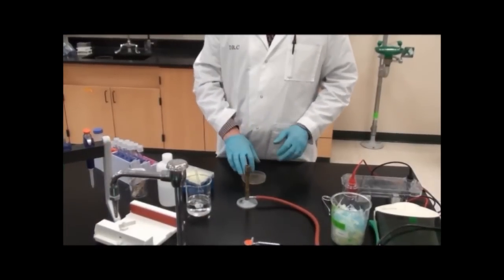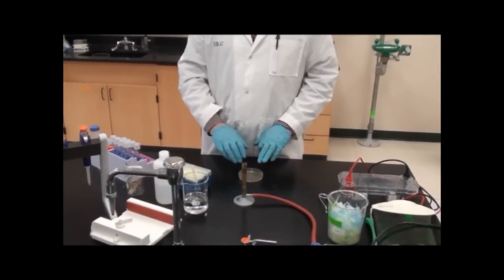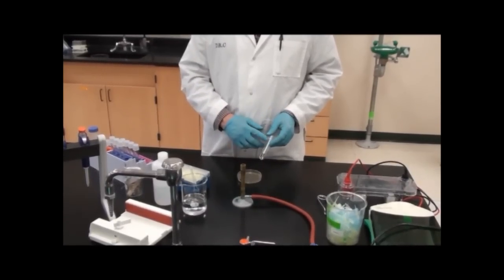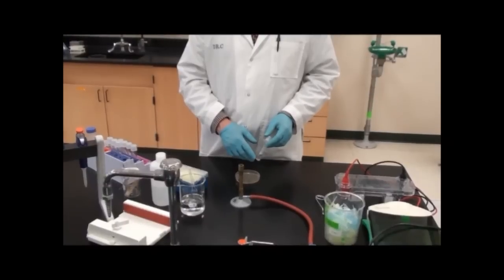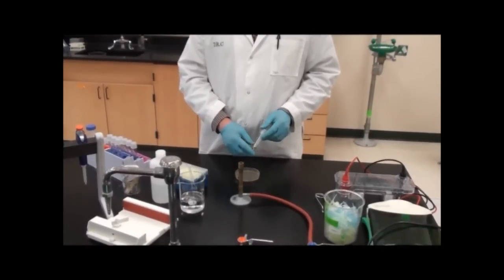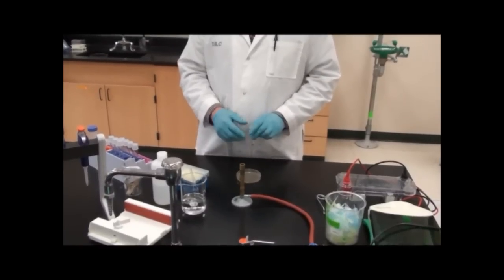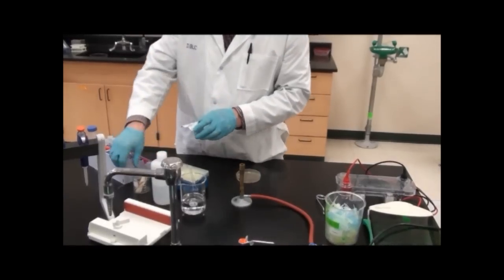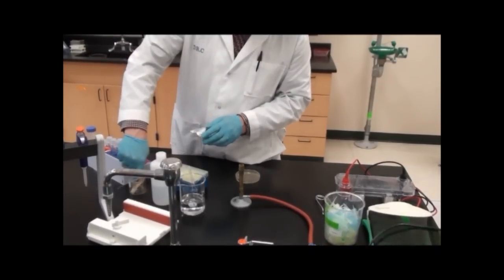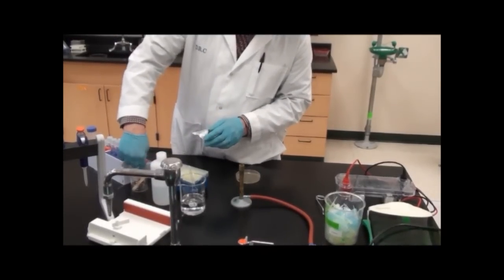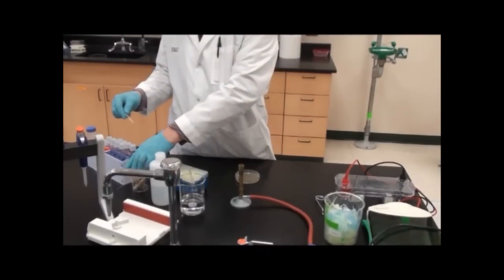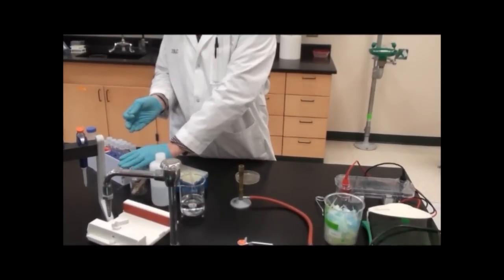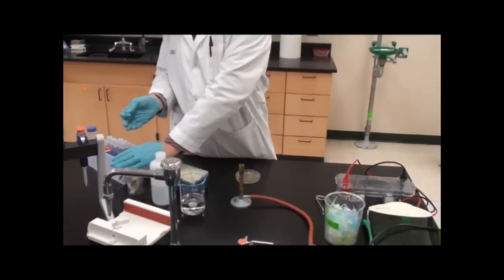Now we're going to select one of these colonies and grow that colony up in these tubes, which contain LB growth media with ampicillin. Again, we have the same selective agent. I'm going to pull out a sterilized toothpick. I'm using gloves on this procedure to keep my hand germs off of the toothpick and colonies. I'm going to cover this back up because they're sterilized.